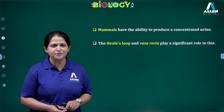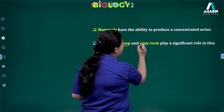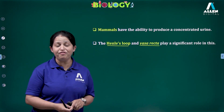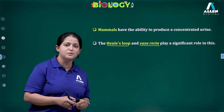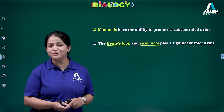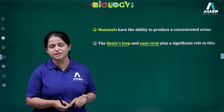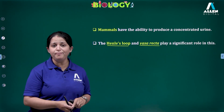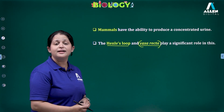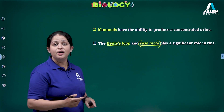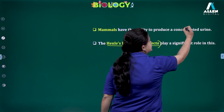In order to produce concentrated urine, two important structures of the nephron play a role: one is Henley's loop and another one is Vasa recta. In the nephron, different parts are present — renal corpuscles consist of Bowman's capsule as well as the glomerulus, whereas the renal tubules include the proximal convoluted tubule, Henley's loop, and the distal convoluted tubule. Henley's loop and the blood capillaries surrounding it — called the Vasa recta — play a very significant role in counter current mechanism to form concentrated urine.